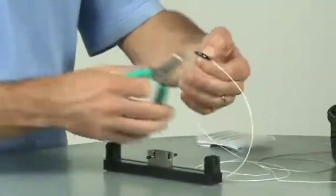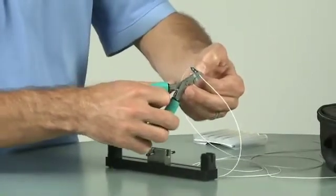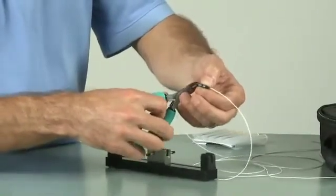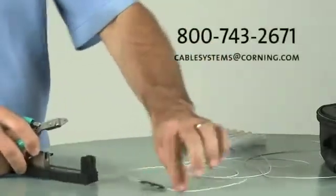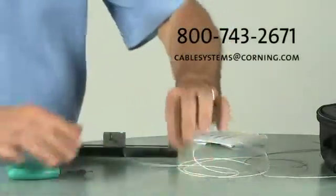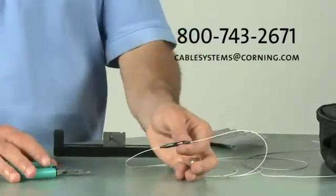In this specific application, we will crimp the lead-in tubes in order to provide torsional and additional strain relief. Your splice is completed and you've successfully joined two fibers together.